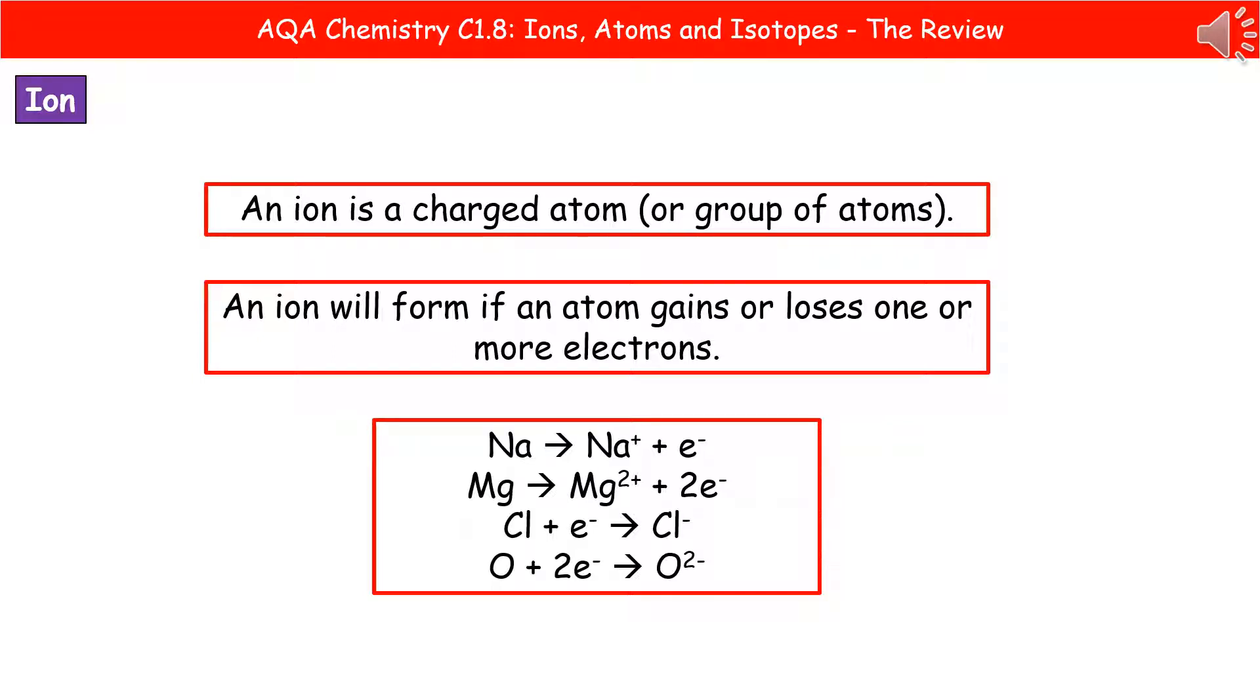And you can work that out from the periodic table, because anything that's in group 1 is going to lose one electron, so it forms a single positive ion. If it's in group 2, it's going to lose two electrons and becomes 2+ ions. And then jumping to the right, if it's in group 7, then it gains one electron to become a single negative ion. And if it's in group 6, it's going to gain two electrons to become a double negative ion.